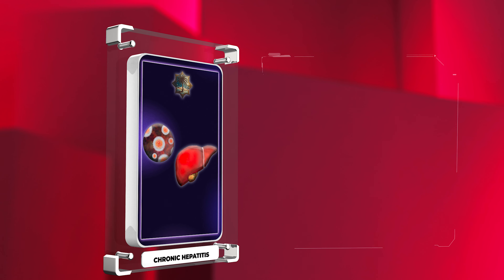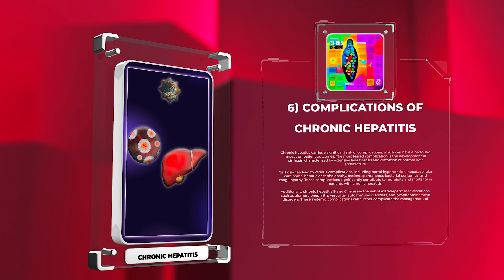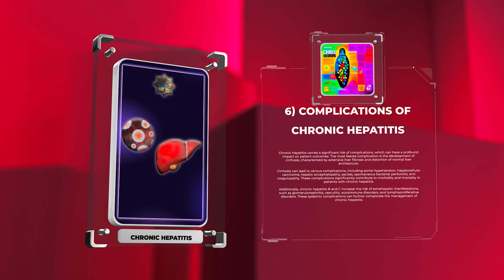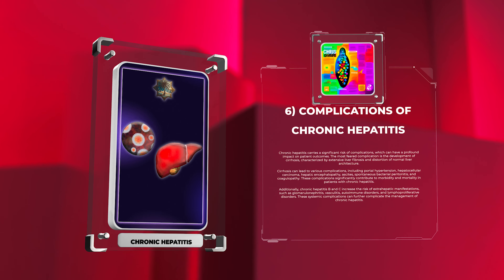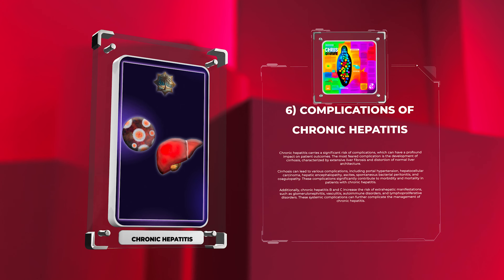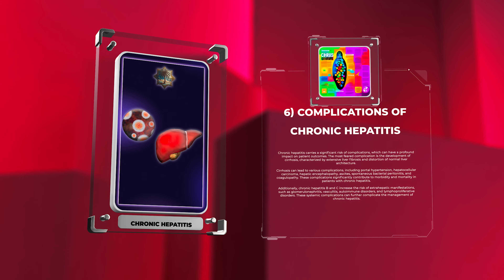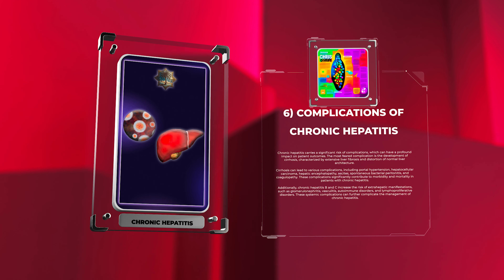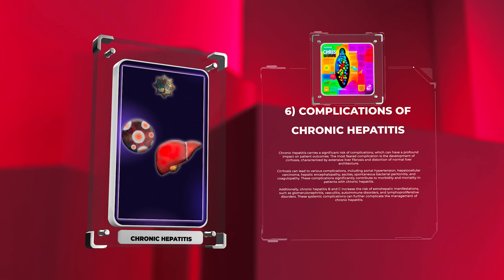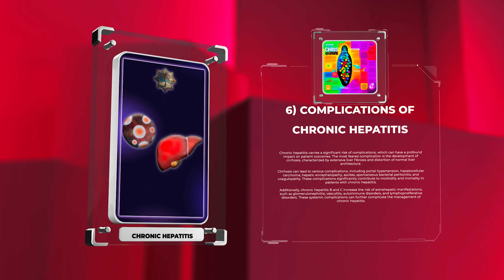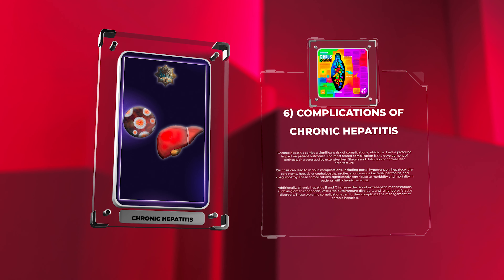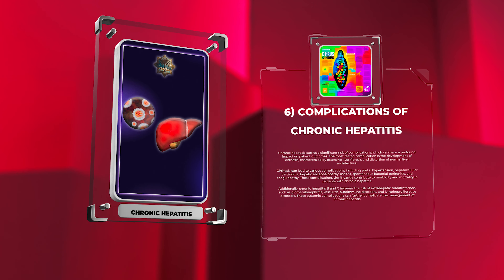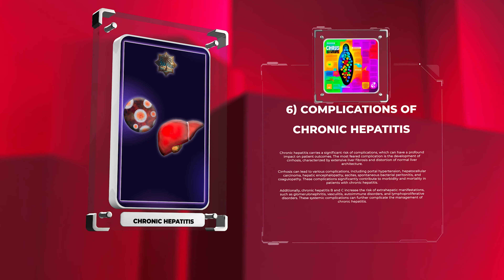Chronic hepatitis carries a significant risk of complications that can have a profound impact on patient outcomes. The most feared complication is the development of cirrhosis, characterized by extensive liver fibrosis and distortion of normal liver architecture. Cirrhosis can lead to portal hypertension, hepatocellular carcinoma, hepatic encephalopathy, ascites, spontaneous bacterial peritonitis, and coagulopathy. Additionally, chronic hepatitis B and C increase the risk of extrahepatic manifestations such as glomerulonephritis, vasculitis, autoimmune disorders, and lymphoproliferative disorders.